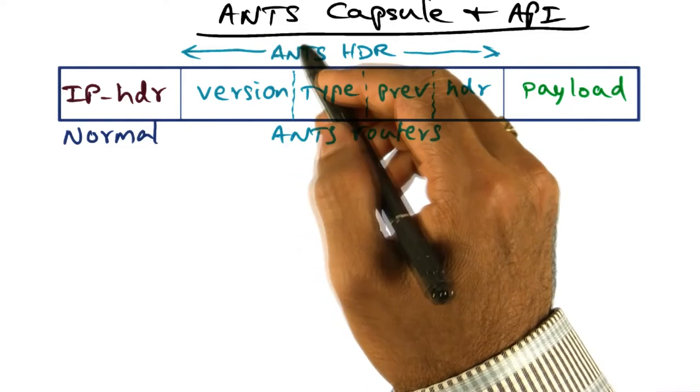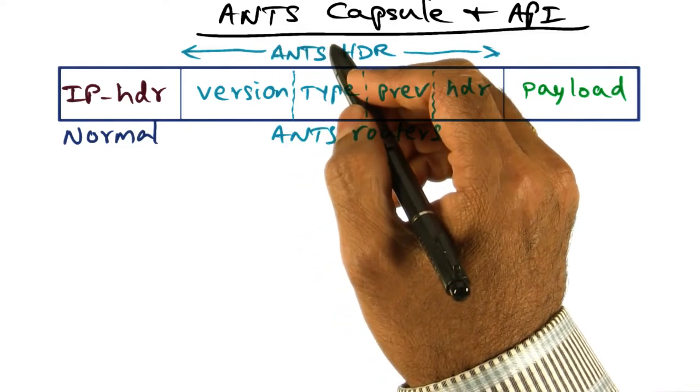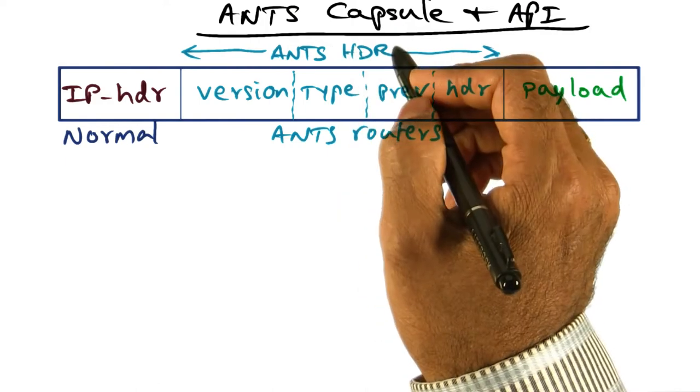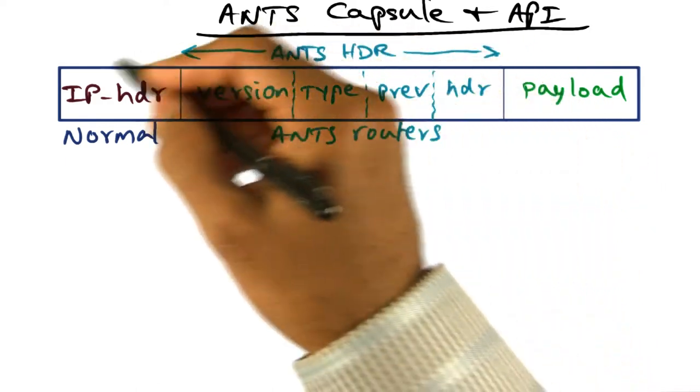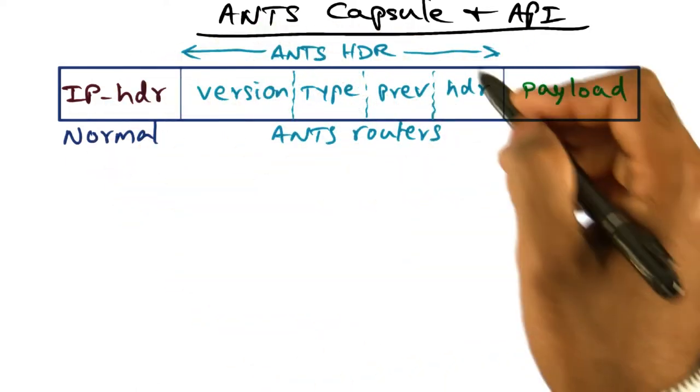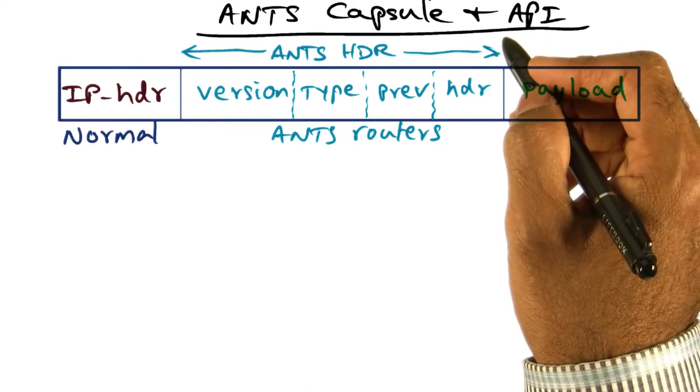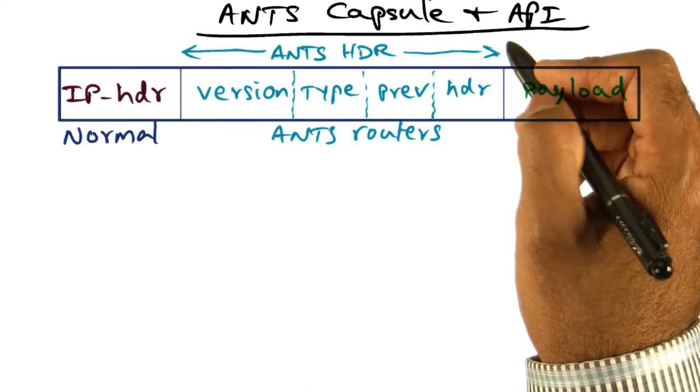So having given you the high level description of what ANTS toolkit does, let's dig a little deeper and look at the structure of the ANTS capsule as well as the APIs provided by ANTS in order to do capsule processing.